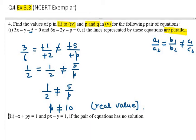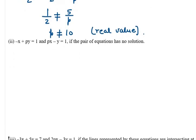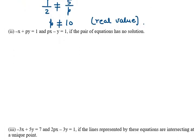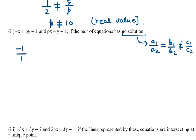Now part 2. It says x plus py equals 1 and px minus y equals 1, and the pair of equations has no solution. No solution means the lines are parallel, so the condition is a1 over a2 equals b1 over b2, which is not equal to c1 over c2. Here a1 is minus 1, a2 is P, b1 is P, b2 is minus 1, and c1 over c2 is 1 over 1.